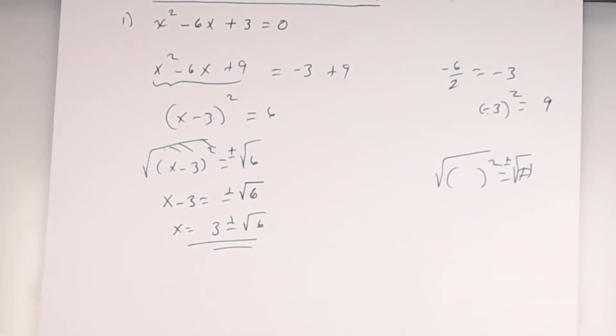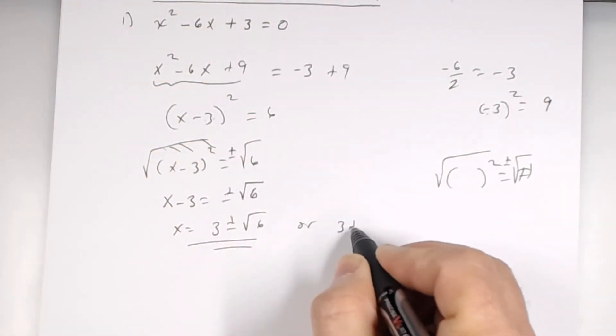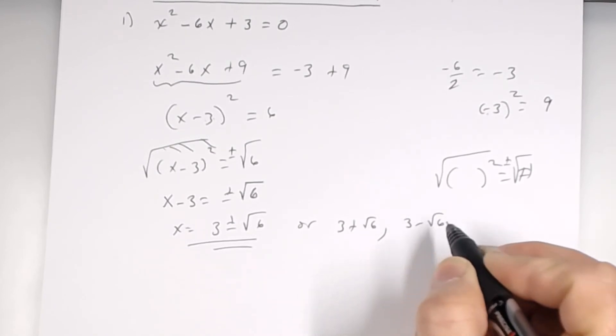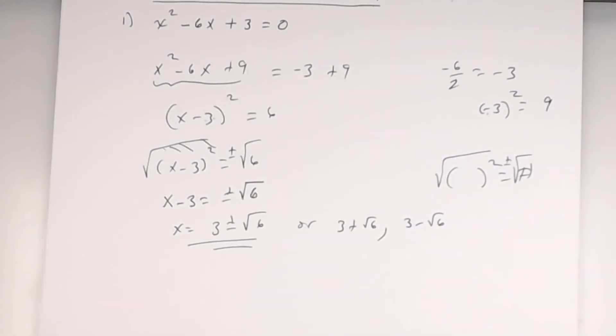Now, my math lab, they're going to tell you to separate us two separate solutions. So, my math lab, you have to use comma. So, my math lab, you're going to have to say 3 plus the square root of 6, comma, and what's the other? 3 minus square root of 6. Okay? All right. Let's look at number 2.